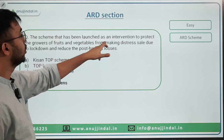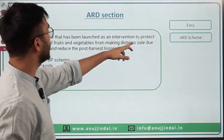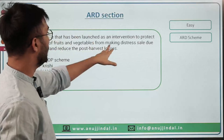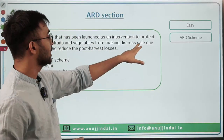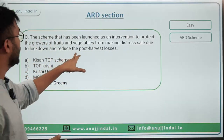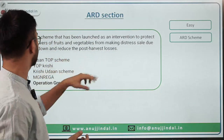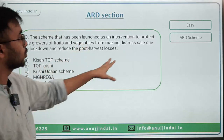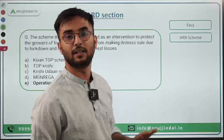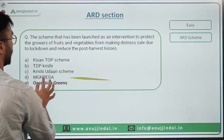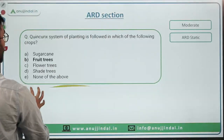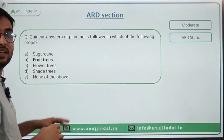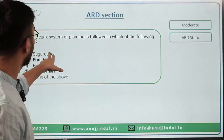'The scheme launched as an intervention to protect the growers of fruits and vegetables making distress sales due to lockdown and reduce post-harvest losses.' This was Operation Greens — an easy, scheme-related question because it was in the news. The Quincunx system question: 'A system of planting followed in which crops?' — it is followed in fruit crops. This was a static, difficult-to-moderate question found in NABARD books.